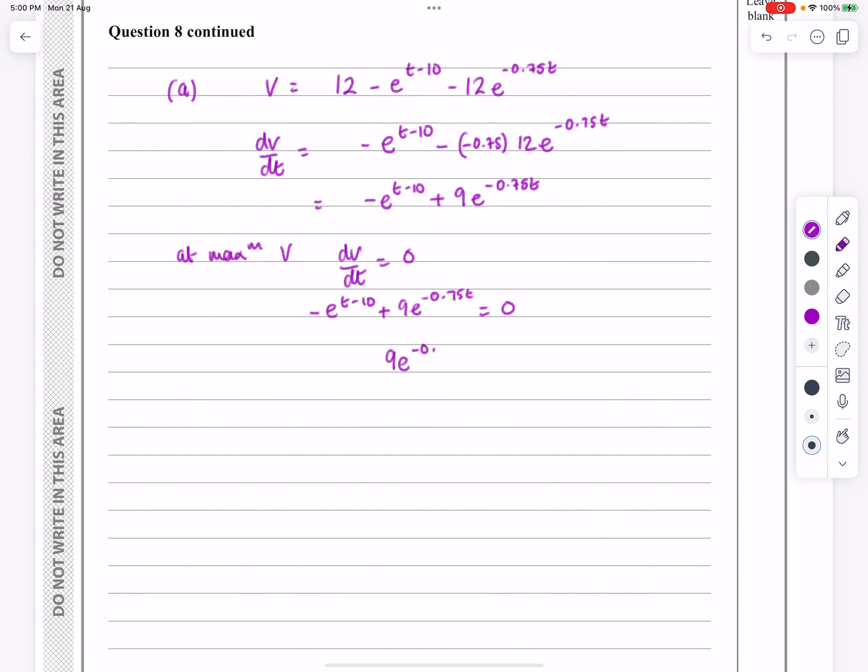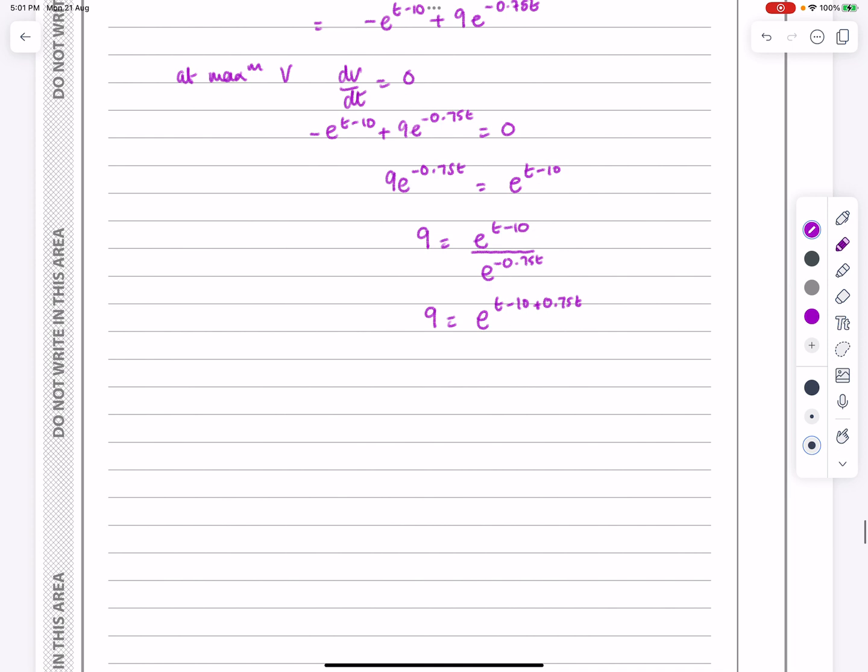I've got 9e to the minus 0.75t equals e to the t minus 10 there. And if I want to divide that down, all I'm going to get is 9 equals e to the t minus 10 divided by e to the minus 0.75t. Well, what do we do when we divide powers? We simply subtract them away from each other. So this is actually going to be e to the t minus 10 minus minus 0.75, so in other words, plus 0.75t.